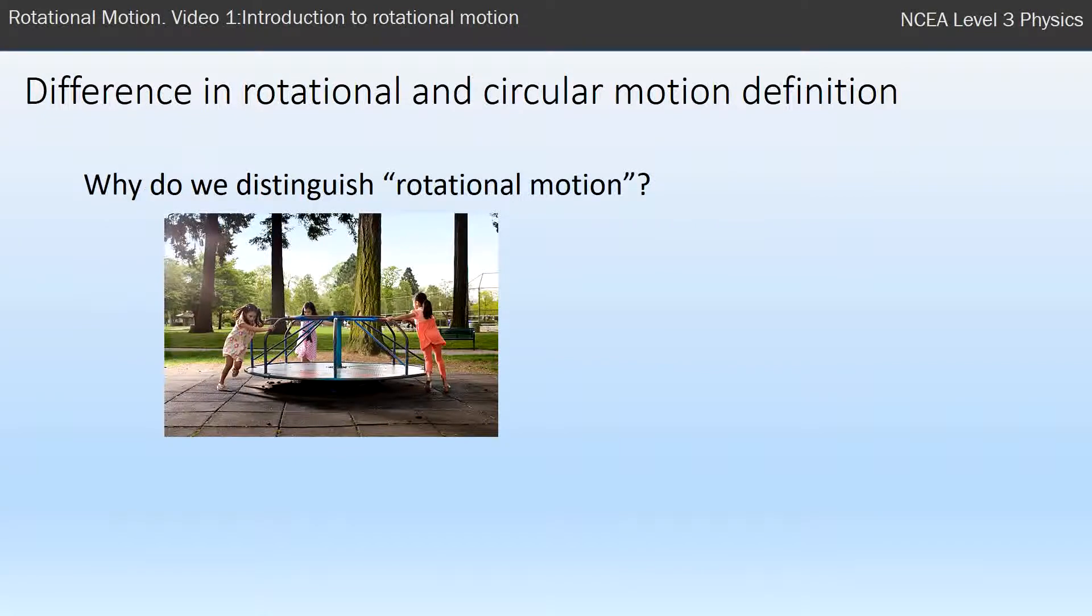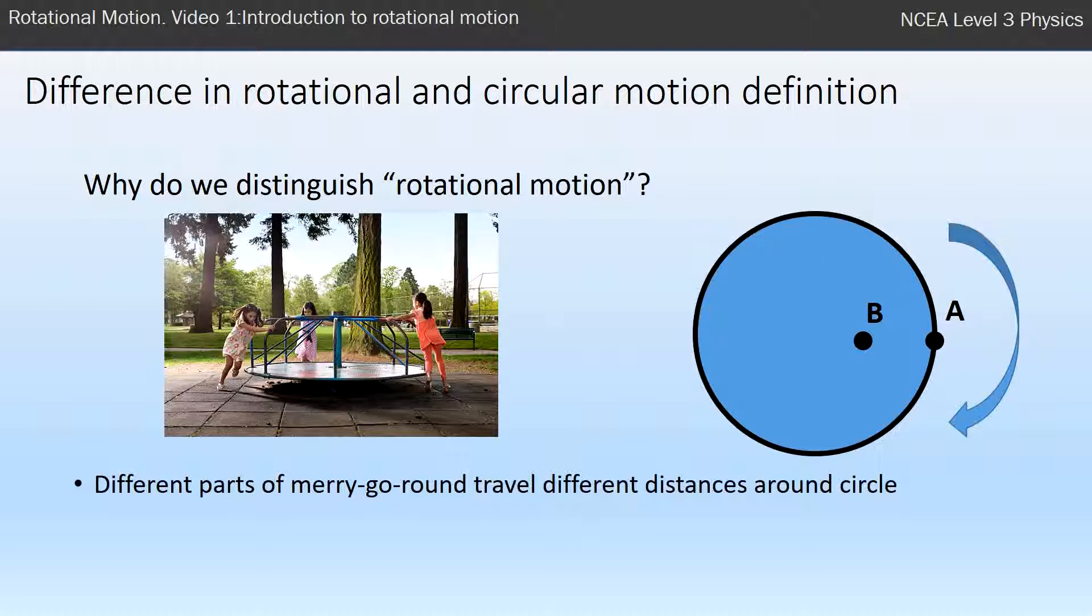So why do we distinguish rotational motion? Why can't we just treat it as circular motion? The issue is, if the diagram on the right here is looking down on a merry-go-round, and if you consider two points on the merry-go-round—A on the outside and B more towards the center—and you think about as this merry-go-round spins around...